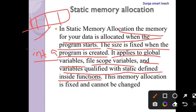When you declare variables inside functions or as global variables, all these variables come under static memory allocation. When memory is allocated at program creation, that is known as static memory allocation, and it is fixed because the memory is allocated during program creation.